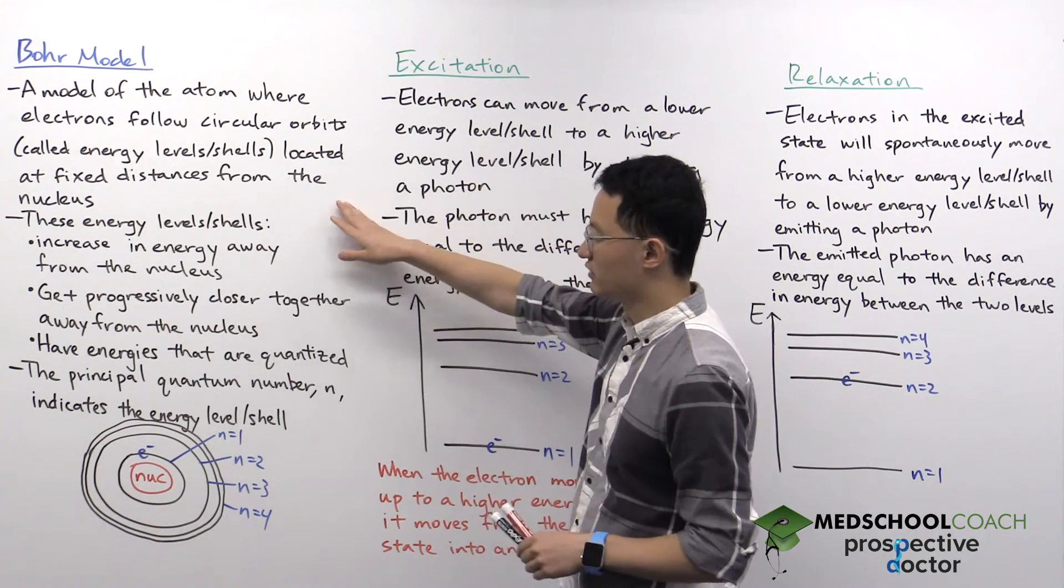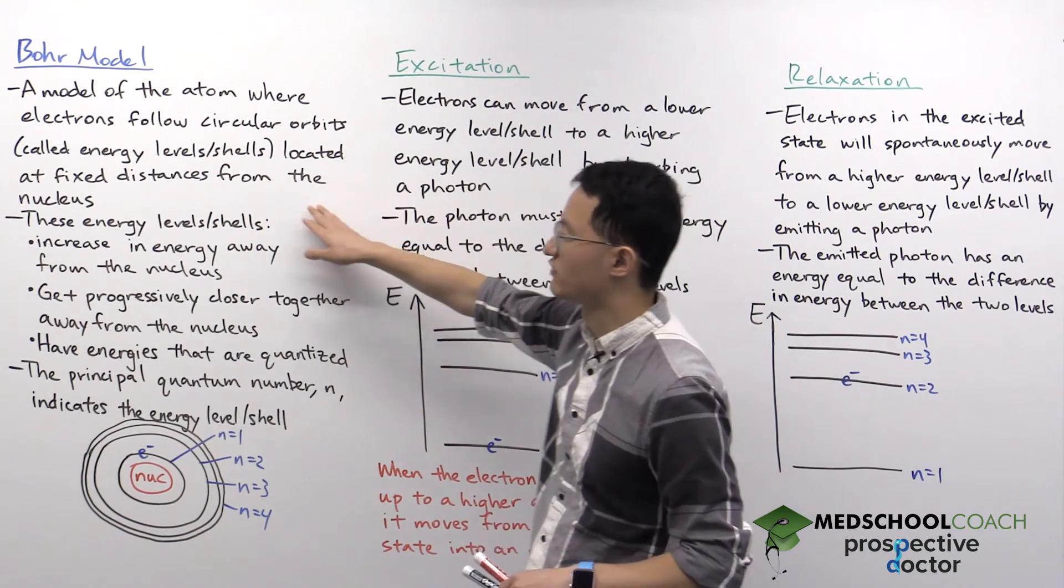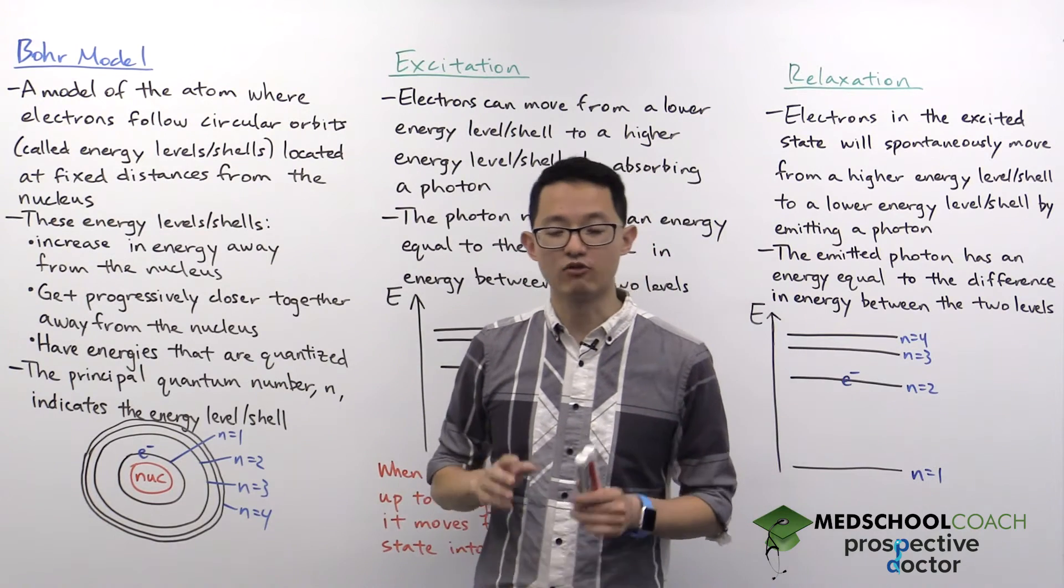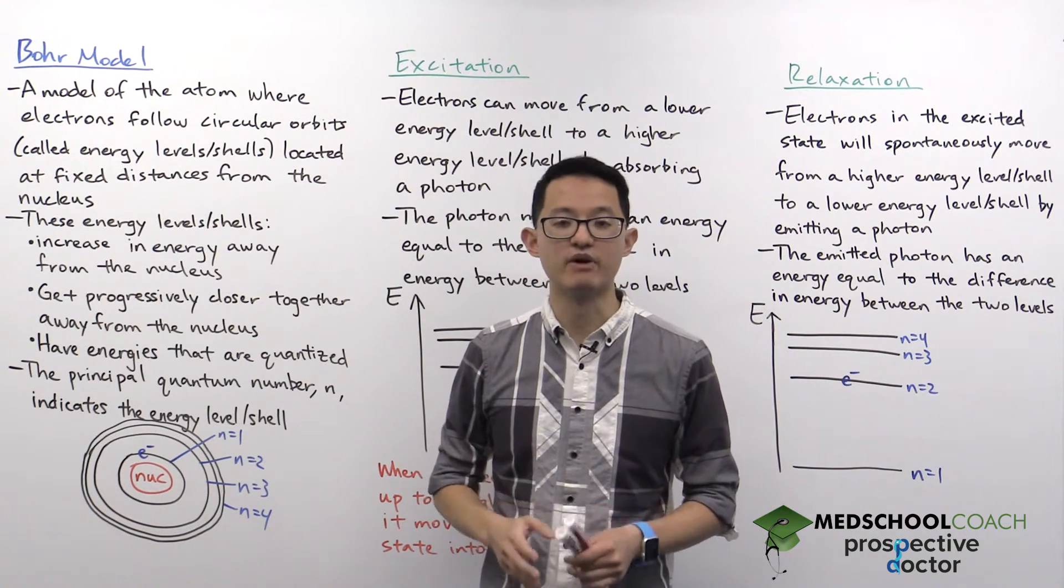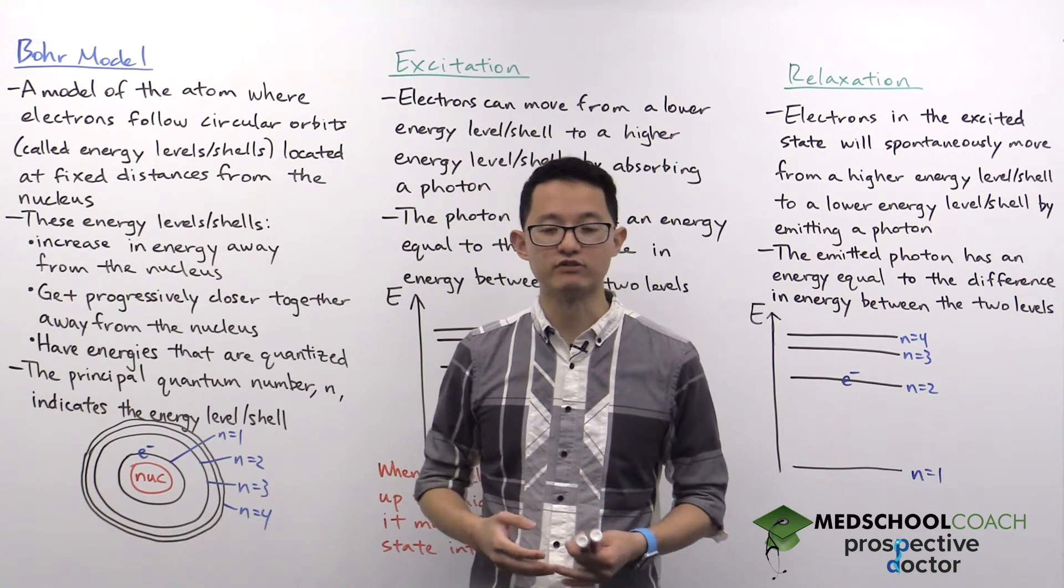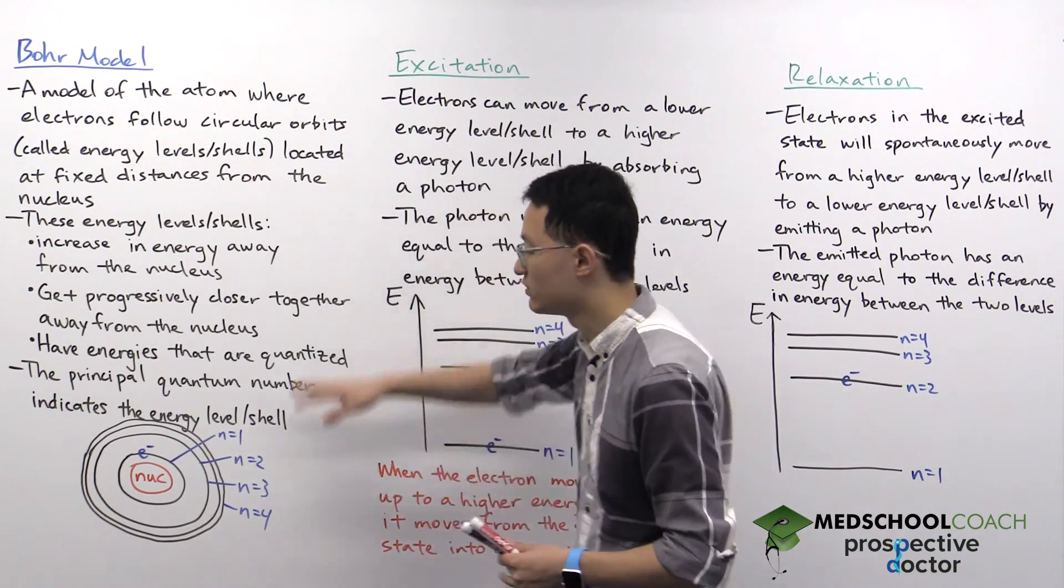With the Bohr model, aside from the fact that the electrons follow circular orbits around the nucleus, an additional detail is that these orbits are located at fixed distances away from the nucleus. And each of these orbits are called energy levels or shells.